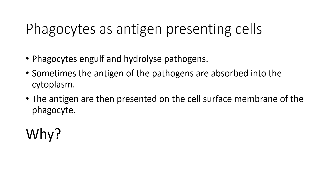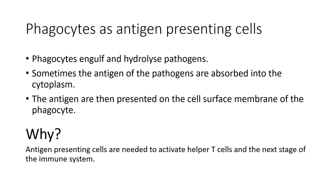Why do phagocytes go to all the trouble of engulfing, hydrolyzing, and then presenting antigens on their surface as antigen presenting cells? The reason is that this is the opening part of the next step in the immune system. When we go through the entire process, you'll find that phagocytes become antigen presenting cells, and antigen presenting cells then activate what are called T helper cells — and that leads us into the next presentation.